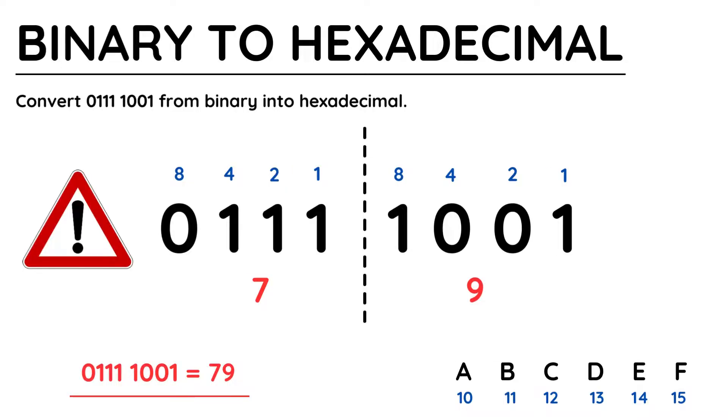Just a really important note, a hexadecimal value doesn't necessarily need to have a letter in it. In this example, 01111001 is converted into hexadecimal and makes 79, not seventy-nine.